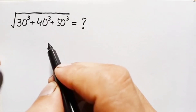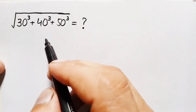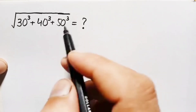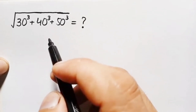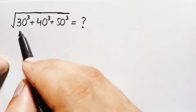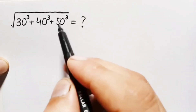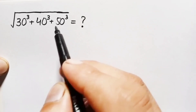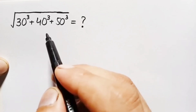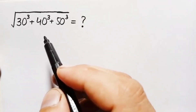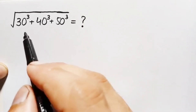Hello everyone, welcome. How to solve and find the value of this interesting math problem, which is the square root of 30 cubed plus 40 cubed plus 50 cubed. I will try to solve this problem using two different methods. Here in the first method: